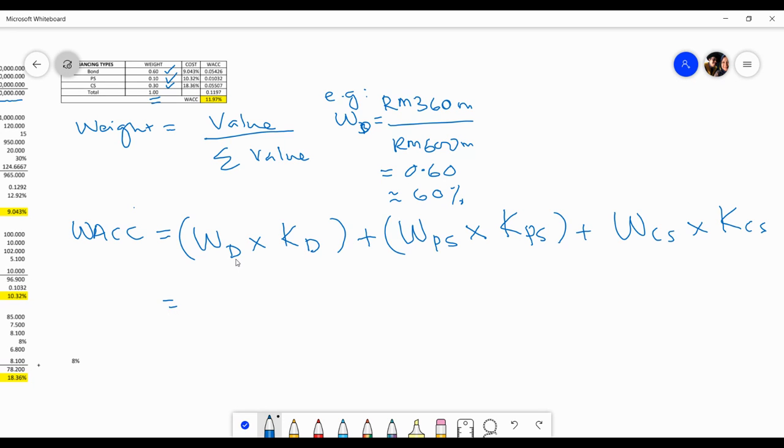So weight for bond or debt times cost of debt after tax. How do we get this? KD after tax equals to KD times 1 minus tax rate.